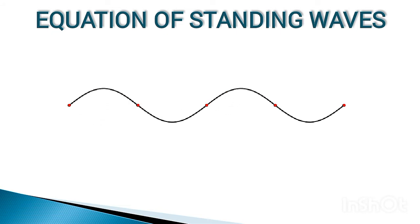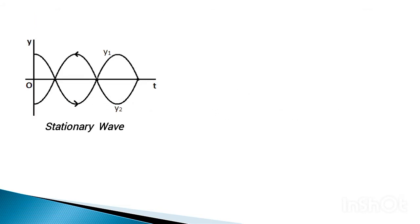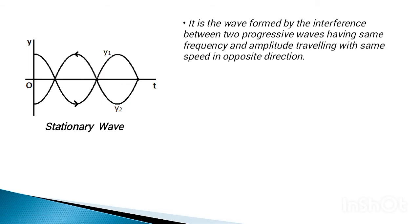Now, how are they formed? You can see in the figure how a stationary wave is formed. It is formed by the interference between two progressive waves having the same frequency and amplitude, traveling with the same speed in opposite directions. The wave Y2 is just a reflection of wave Y1 due to some obstacle in the path of Y1. The interference between these two waves results in the formation of stationary waves.